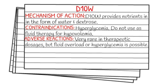Contraindications: hyperglycemia — obviously you don't want to give a sugar product to somebody who already has high blood sugar — and you don't use it as fluid therapy for hypovolemia. Also, if you are suspecting a CVA, it's probably not the best idea to give D10W.